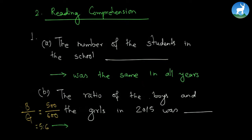That turns out to be 5:6 if you cancel out and do the math. So the answer is the ratio of boys and girls in 2015 was 5:6.